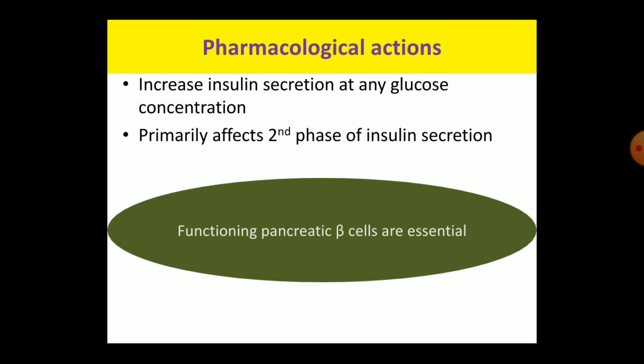Sulfonylureas act on pancreatic beta cells and stimulate them. This stimulation is only possible if the beta cells are functionally present. Therefore, functioning pancreatic beta cells are essential for the action of sulfonylurea. Hence, sulfonylureas are not effective in cases of absolute insulin deficiency, such as destruction of pancreatic beta cells in type 1 diabetes. That is why sulfonylureas are effective only in type 2 diabetes.